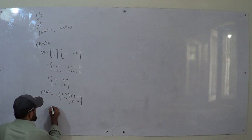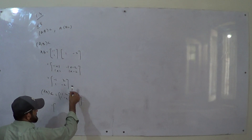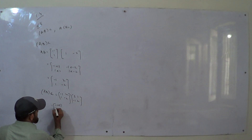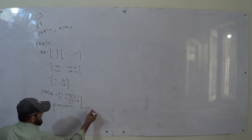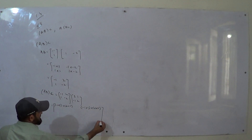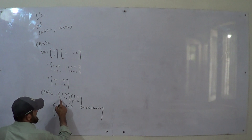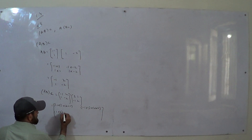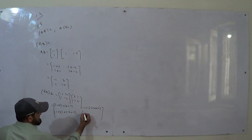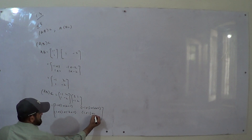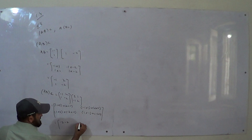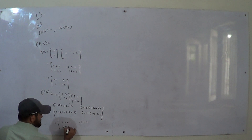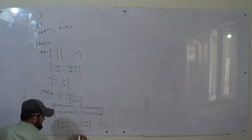Now we multiply. First row with first column: (-1)(3) + (2)(-1). First row with second column: (-1)(1) + (2)(2). Second row with first column: (1)(3) + (-2)(-1). Second row with second column. We get: -3 - 2, -1 + 4, 3 + 2, 1 - 4. The answer is [-5, 3, 5, -3].